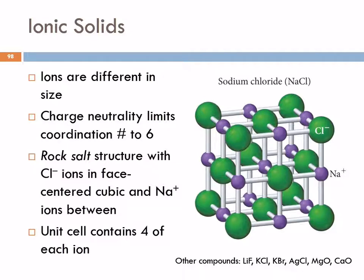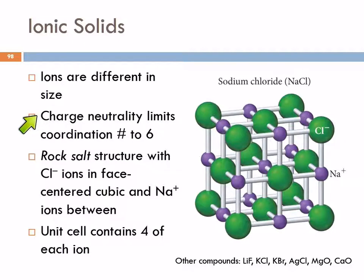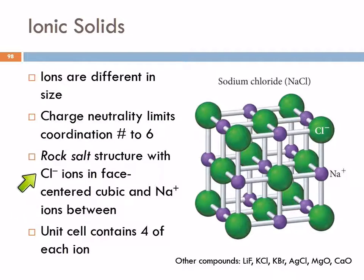If the ions are different in size, such as sodium chloride — where the sodium ions are very small compared to the large chloride ions — the packing is limited because we have to maintain charge neutrality. We can't just throw in a whole bunch of little tiny sodium atoms to fill the spaces; it has to be a one-to-one ratio. Rock salt is the face-centered cubic structure in which the sodium ions are in between with the chloride ions on the faces.